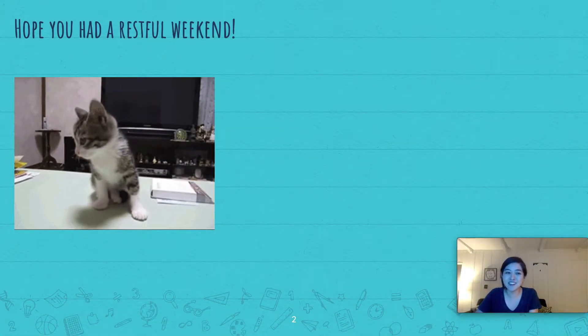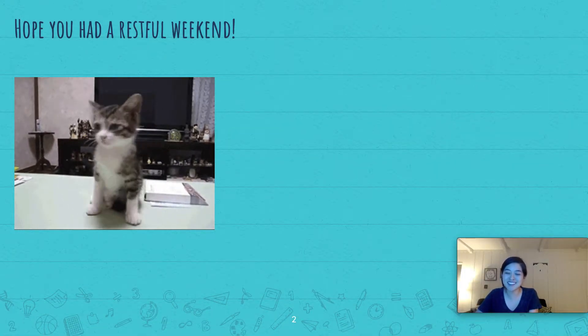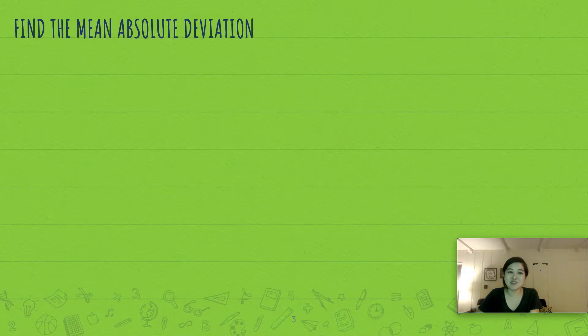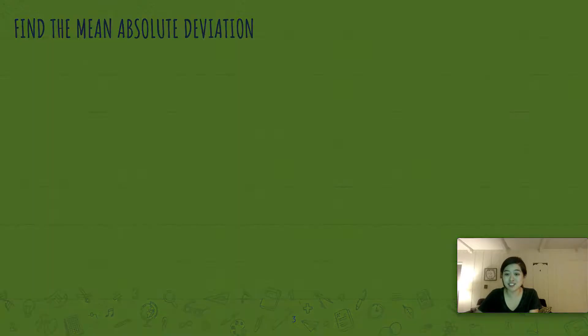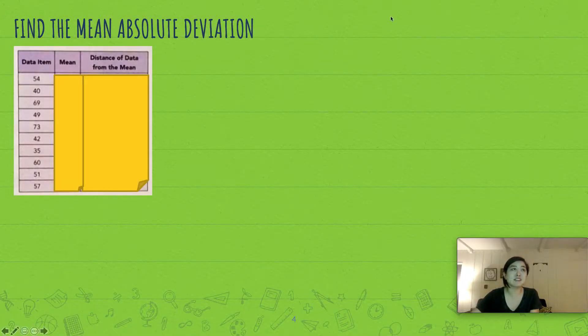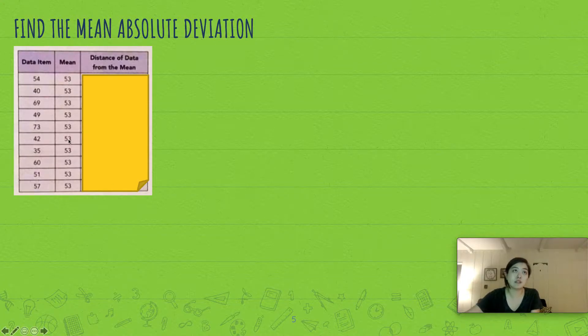Hi seventh grade, I hope you had a restful weekend. Well, let's review some things that we've already learned. Do you remember how to find the mean absolute deviation? We have a data set and we write it in a chart like this, then we find the mean of the data set by adding these items and dividing by the total number of items in the data set, and that becomes this 53.